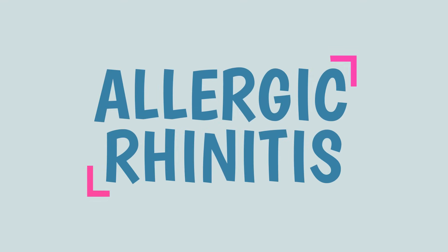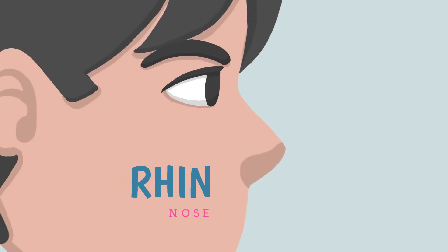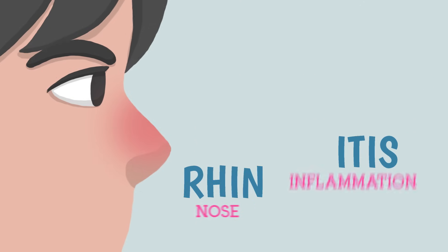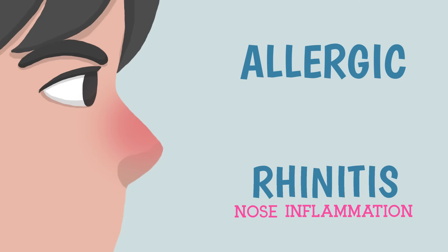Allergic Rhinitis. Rhin comes from the Greek word meaning nose, and itis means inflammation. So it means inflammation of the nose. And allergic means it is caused by allergens.